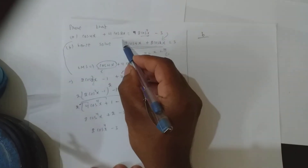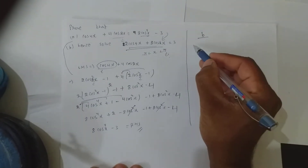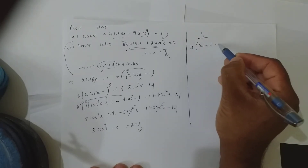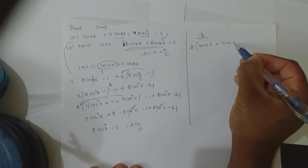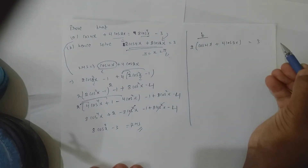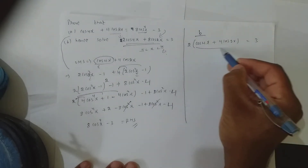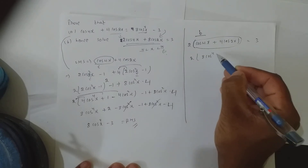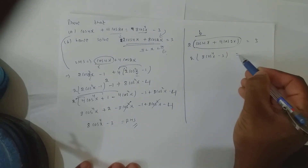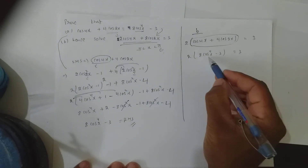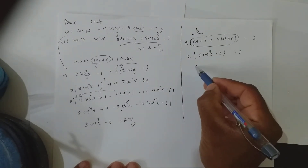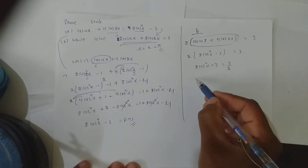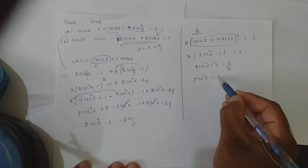Is this similar to the first part? Yes — when I take 2 common, it becomes cos 4x + 4 cos 2x = 3/2. Now I can use the first part result. In place of the entire bracket I can write 8cos⁴x − 3 = 3/2. So now make cos x the subject: send minus 3 to that side, giving plus 3.